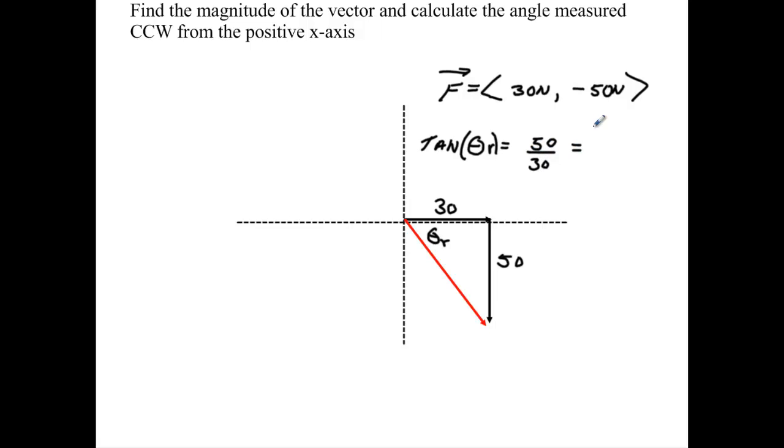We'll take the, do the calculator. 50 divided by 30, second tan, second answer. And I get a value of 59.04.